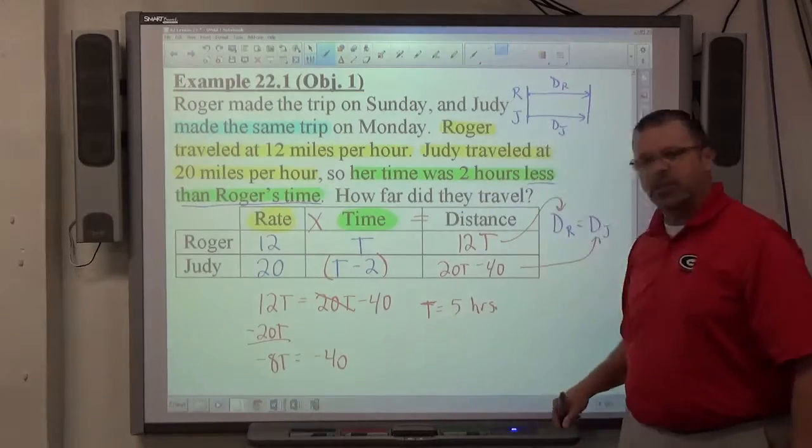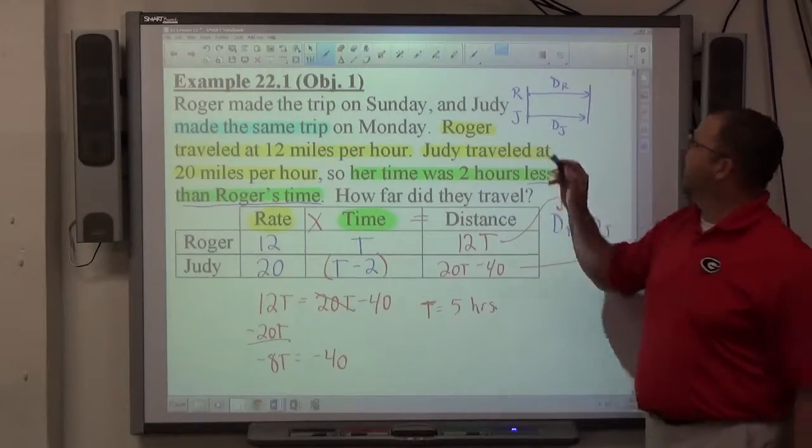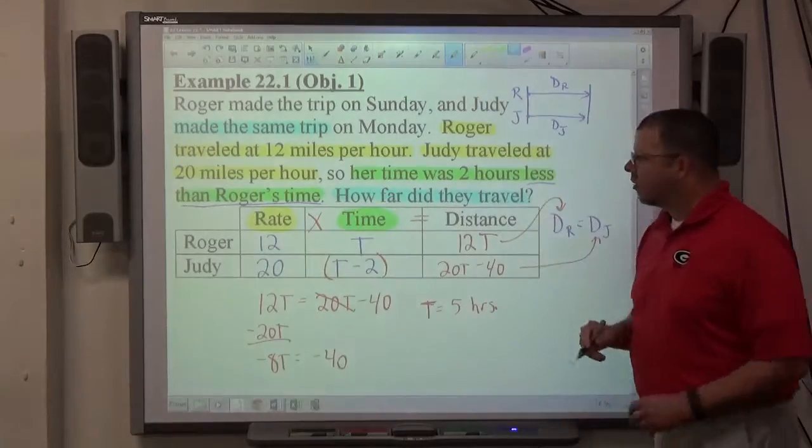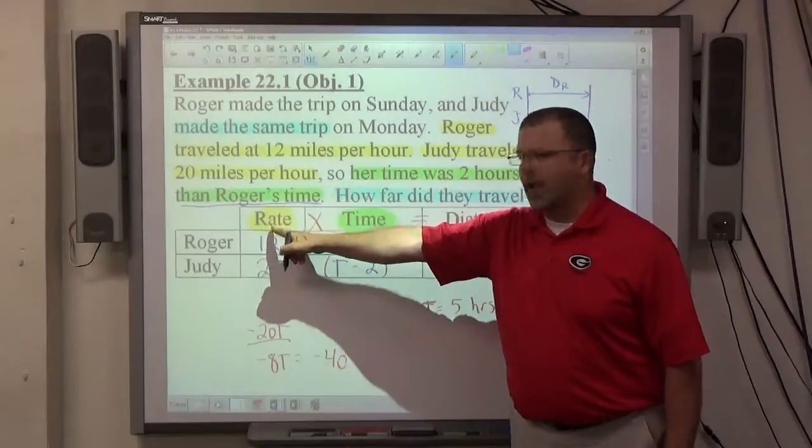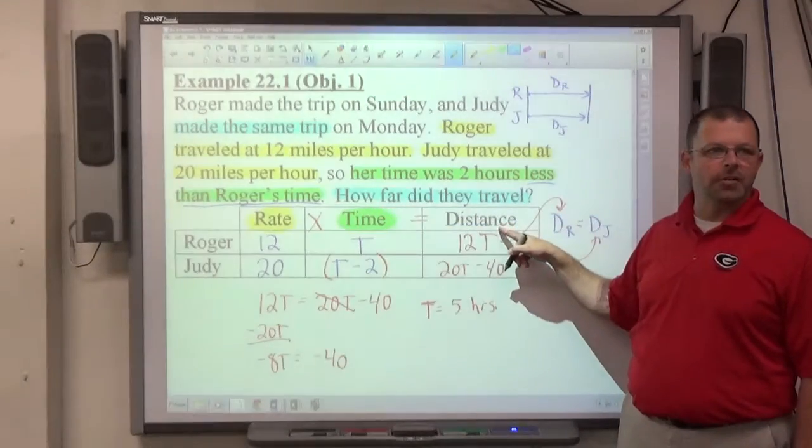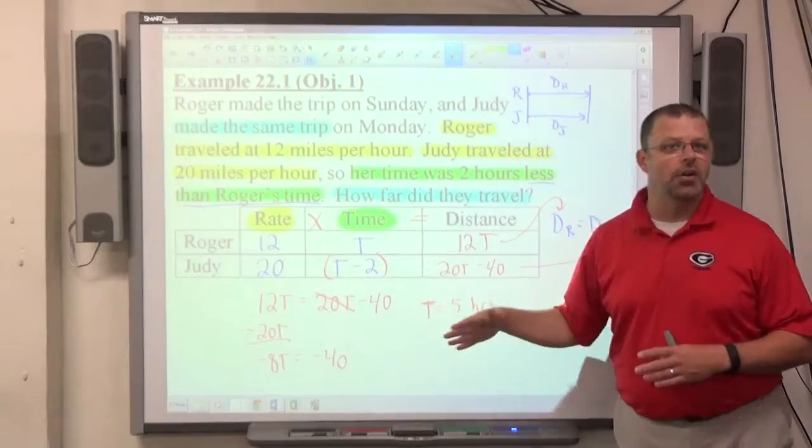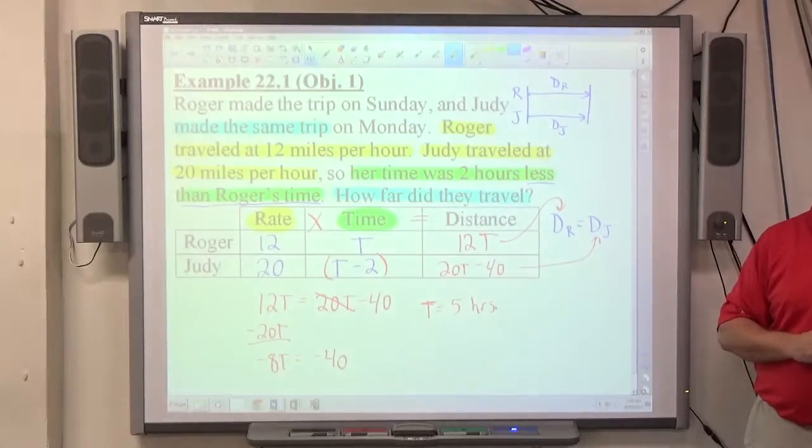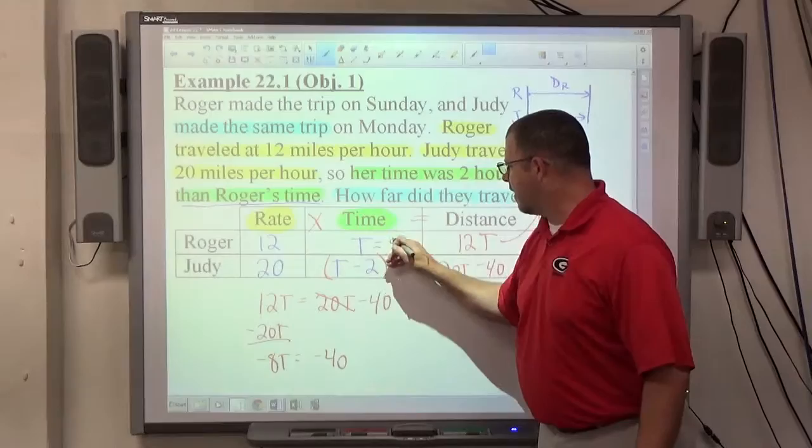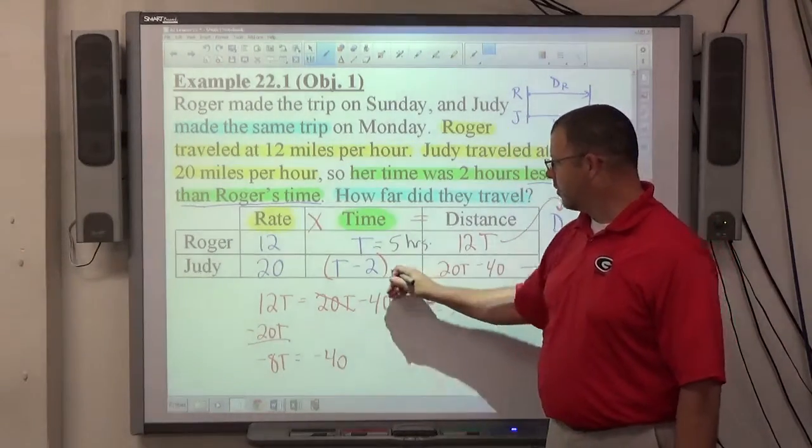The last step on these problems, and the step that a lot of people forget to do, is you have to answer the question they're asking. The question they're asking is, how far do they travel? We've got three things here. Rate is how fast. Time, how long. Distance, how far. How far is a question of distance. They're asking for their distance. We found time, which is how long. It took Roger five hours to get to town. If I were Roger, I'd be upset. But, Roger took five hours. How long did it take Judy? Three hours. We know that because her time is two hours less.